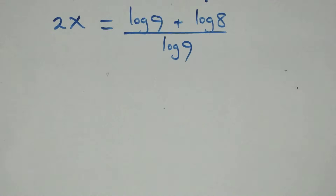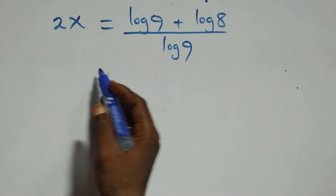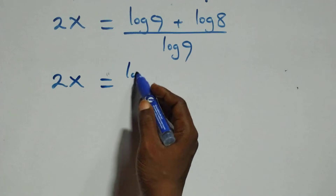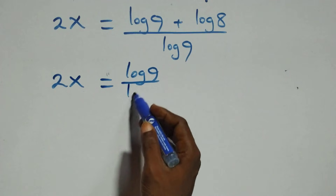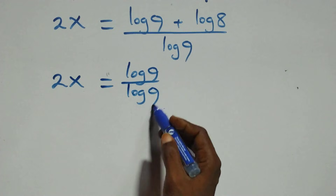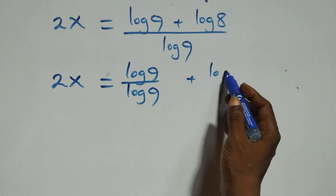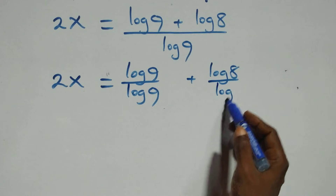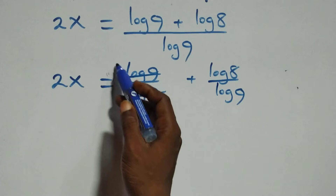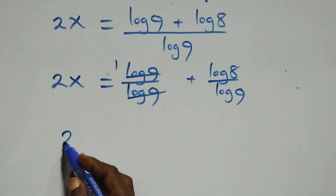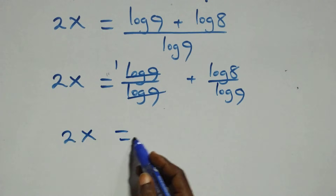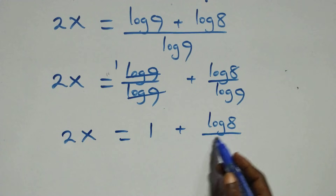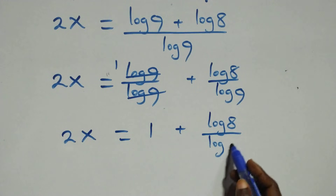Here log 9 cancels with each other. We separate this into two fractions and have 2x equals to log 9 over log 9 plus log 8 over log 9. Log 9 over log 9 gives one, so what we have becomes 2x equals to 1 plus log 8 over log 9.